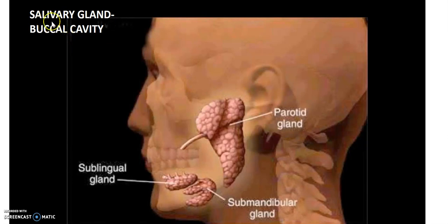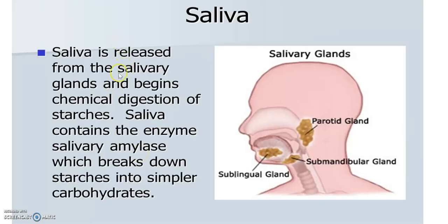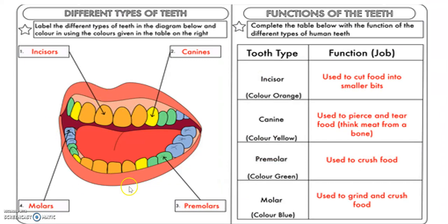First, we are studying the salivary gland that is present in our buccal cavity, or mouth. Apart from teeth and tongue, we have salivary glands on both sides of the mouth. The salivary gland is responsible for the secretion of saliva, which contains salivary amylase, which helps in the breakdown of complex carbohydrates like starch into simple carbohydrates like glucose.